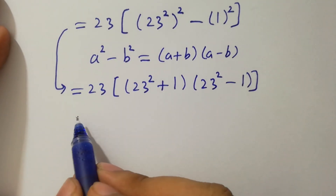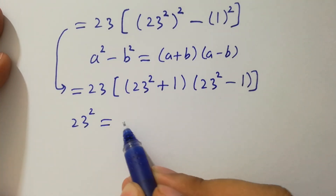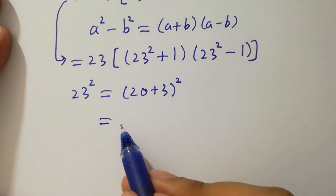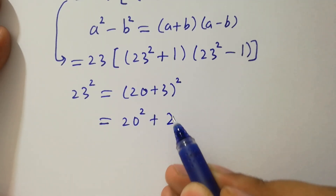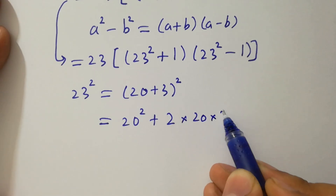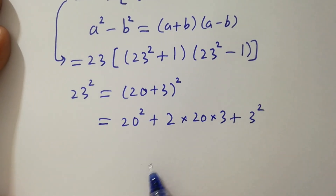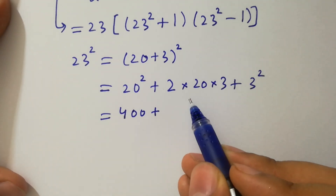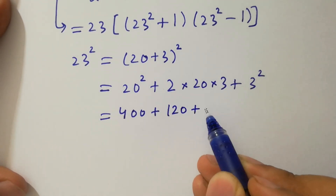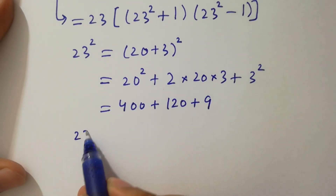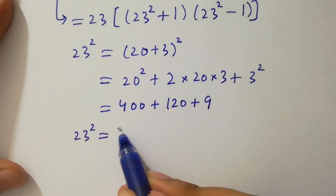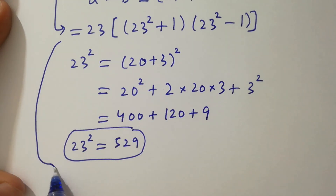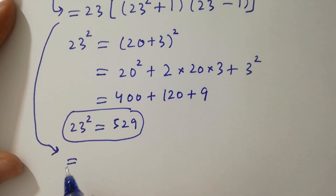Now, 23 squared equals (20 plus 3) whole squared. Applying the formula (a plus b) squared equals a squared plus 2ab plus b squared: 20 squared is 400, plus 2 times 20 times 3 which is 120, plus 3 squared which is 9. So 23 squared equals 400 plus 120 plus 9, which is 529.